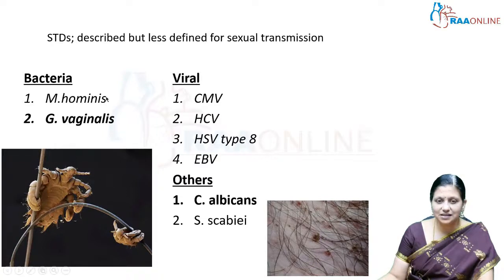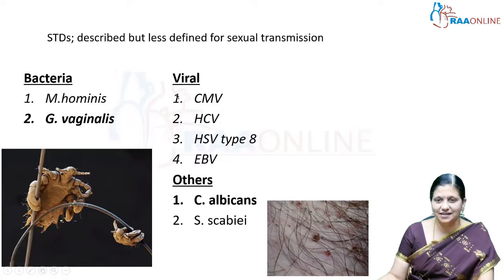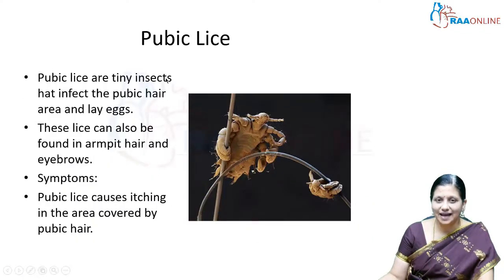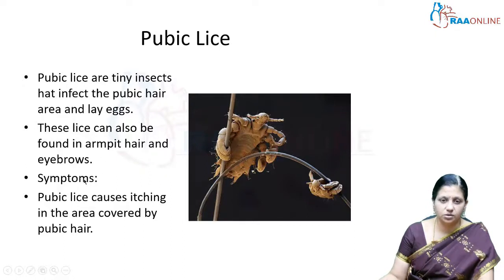Some diseases can also be transmitted by close contact, including Mycoplasma hominis and Gardnerella vaginalis. Viral diseases transmitted by close contact include CMV, HCV, herpes simplex virus, and Epstein-Barr virus, as well as Candida and scabies. Pubic lice are tiny insects that infect the pubic hair area where they lay eggs; they can also be found in armpits, hair, and eyebrows, causing itching in the area covered by pubic hair.